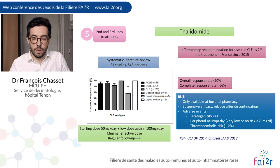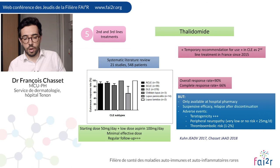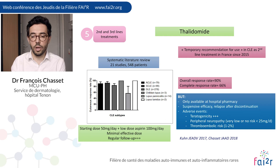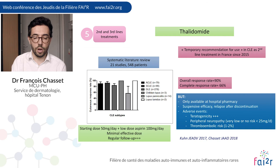In our clinical practice, we start thalidomide at a dose of 50 mg per day and systematically add low-dose aspirin at 100 mg per day. After cutaneous remission, we try to reach a minimally effective dose, as it is known that there is no peripheral neuropathy when using doses lower than 25 mg per day with regular follow-up.